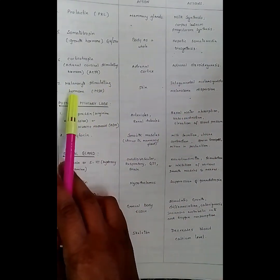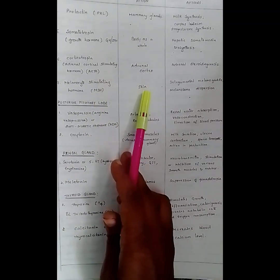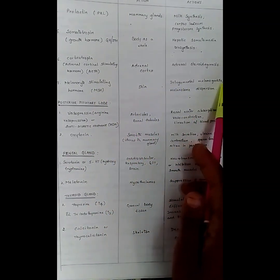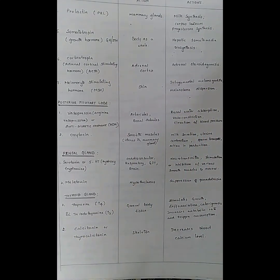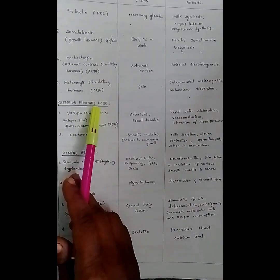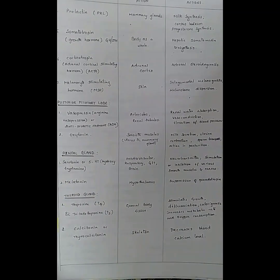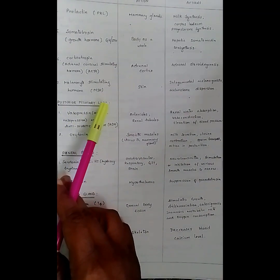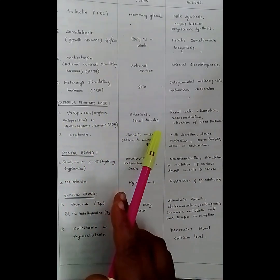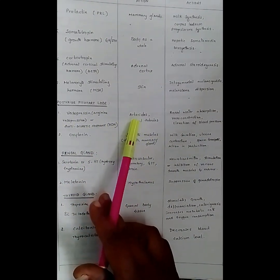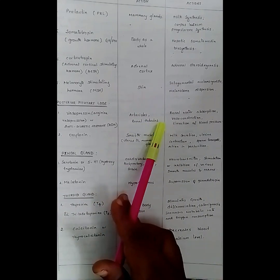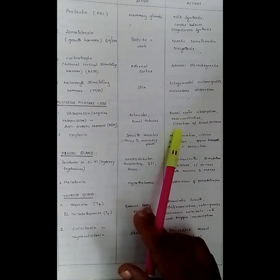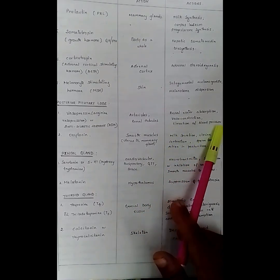Melanocyte stimulating hormone — its site of action is in the skin and is helpful in melanogenesis and melanosome dispersion. Now let us see the hormones released by the posterior pituitary lobe. Vasopressin — its site of action is in the arterioles and renal tubules and is helpful in renal water absorption, vasoconstriction, and elevation of blood pressure.